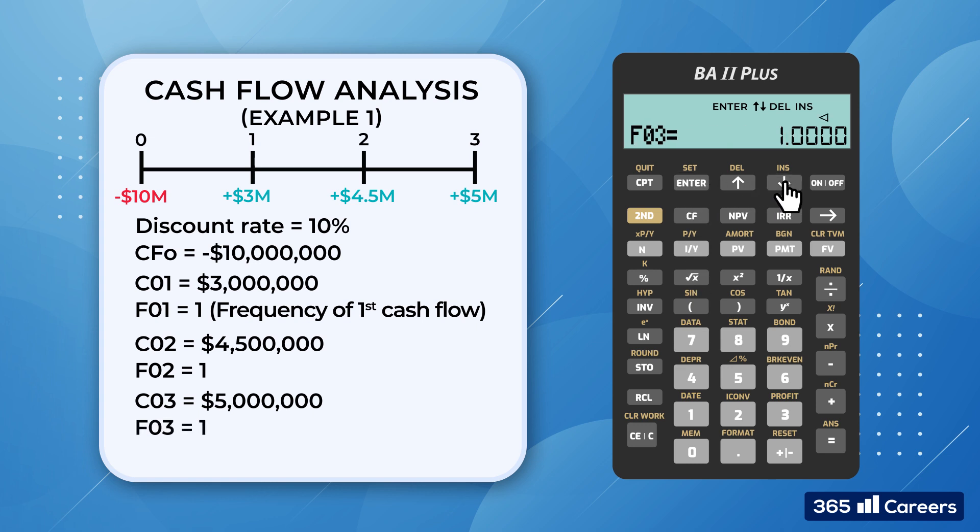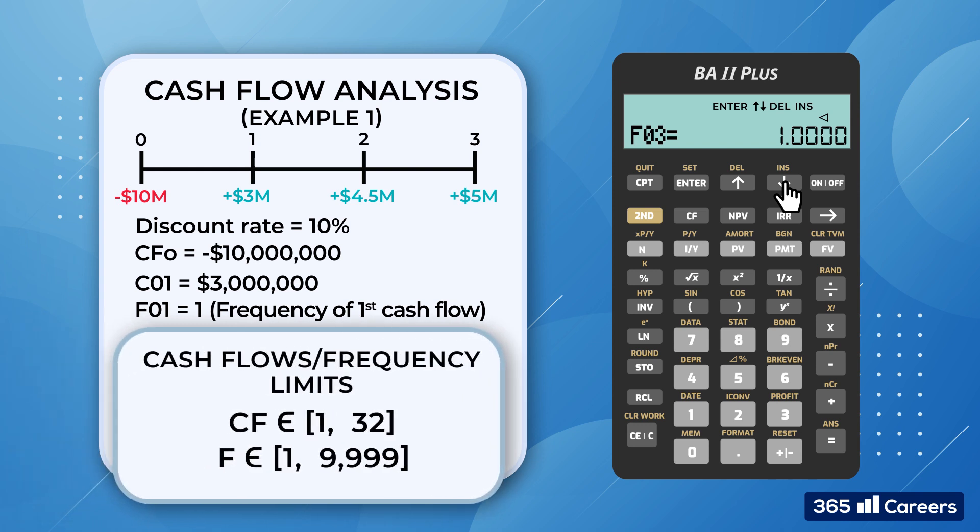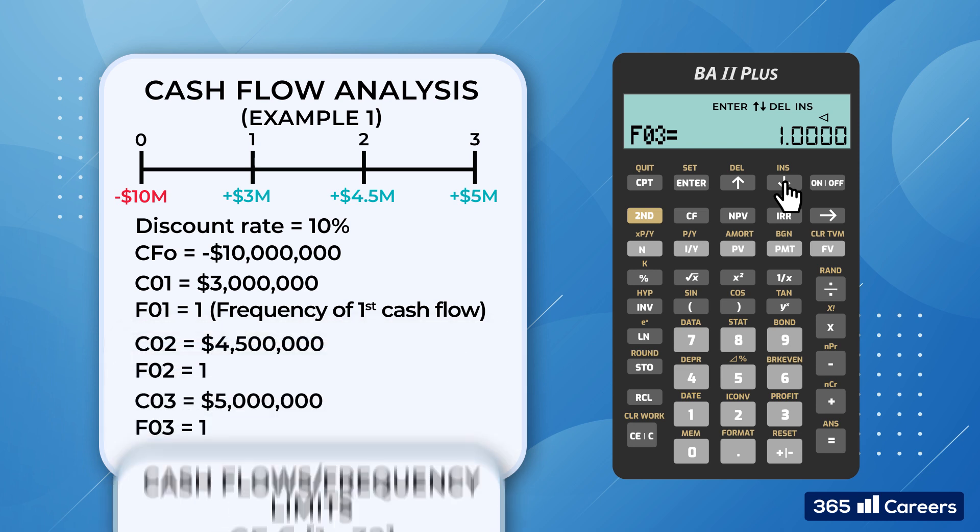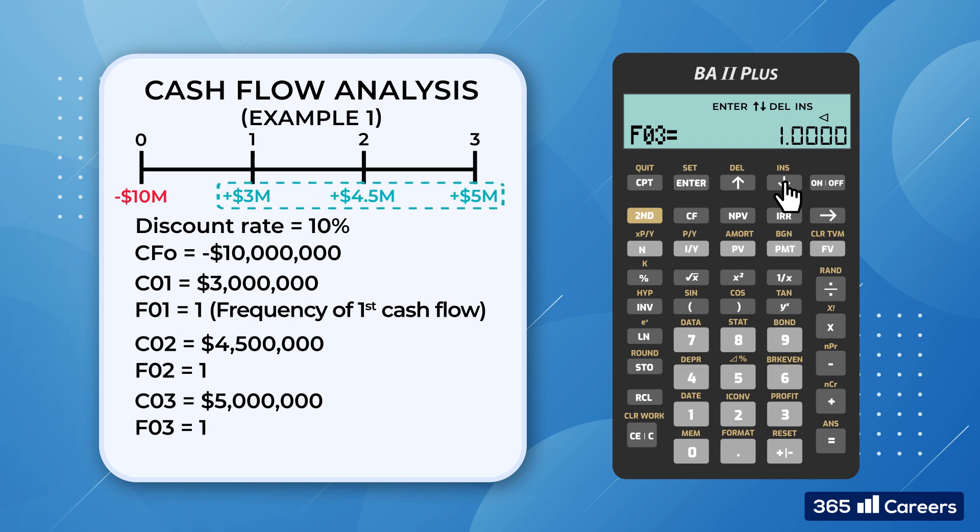If we continue to input values, we will see that the calculator allows us to enter up to 32 additional unique cash flows. And the frequency of each one could be from 1 to 9,999. I'm sure you could do the math and figure out the total number of cash flows we could enter using the Texas Instruments BA2+.